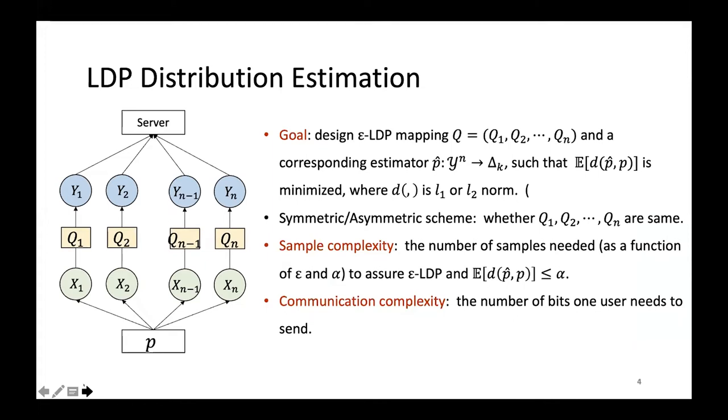We consider distribution estimation under LDP. Still, we have n samples from p, but these samples will be first privatized by some epsilon LDP mappings. Then, the server needs to give an estimation of p only through these privatized samples. The goal is to design epsilon LDP mappings and give an accurate estimation of p. If all users use the same privatized mapping, we call the privatization scheme symmetric, otherwise it's asymmetric. There are two important complexity parameters we care about. The first is the sample complexity, defined as the least number of samples to satisfy accuracy and privacy constraints. In the local model, the communication cost is also important. The communication complexity here is the number of bits one user needs to send to the server.